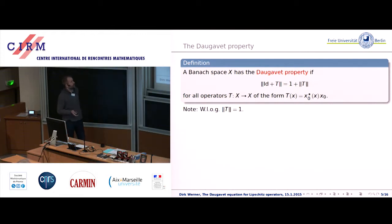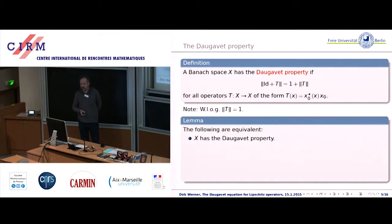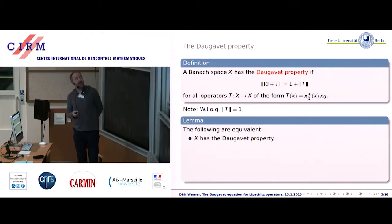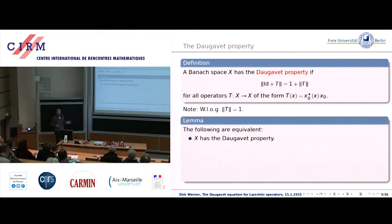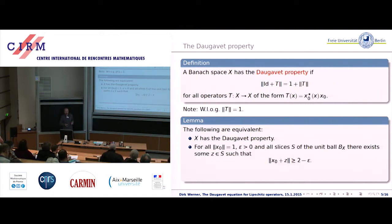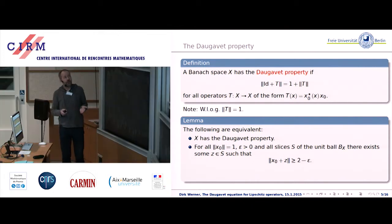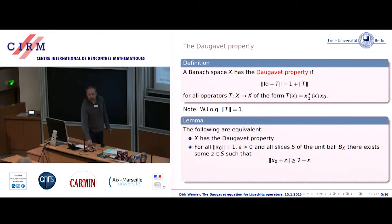First of all, one can reduce everything to operators of norm one by a relatively easy convexity argument. Now the key advantage of this approach is that you can reformulate all this geometrically. The really basic lemma for all the investigations to come is that the Daugavet property is related to a certain flatness property of the unit ball. I will try to give you a very naive picture of what this lemma says.